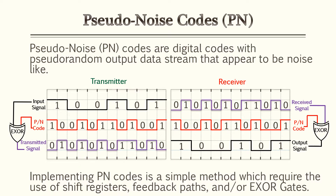It's very easy to implement a pseudo noise code — you can use shift registers, feedback paths, or exclusive-OR gates. In the illustration, a transmitter takes an input signal, applies the pseudo noise code through an exclusive-OR gate, and transmits the signal as chips. The receiver, using that same pseudo noise code through an exclusive-OR gate, recovers the same output as the original input. It's that simple.